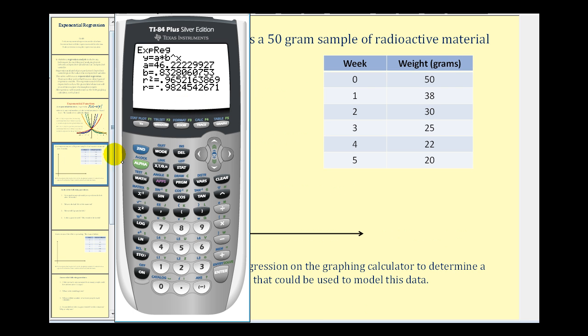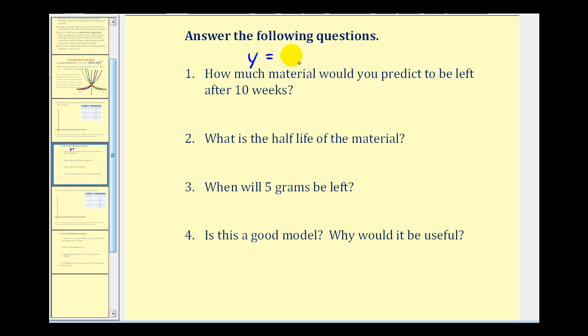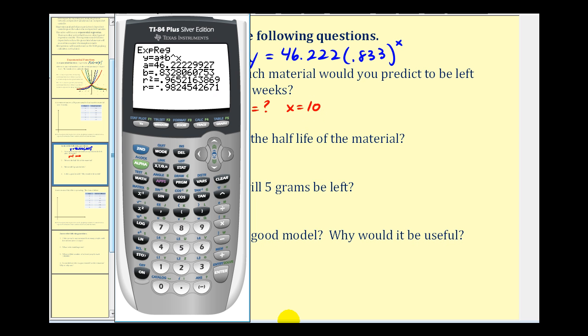Let's go ahead and write this equation down, and then answer some questions based upon our equation. So we have y is equal to approximately 46.222 times approximately .833 raised to the power of x. So the first question, how much material would you predict to be left after 10 weeks? So using our regression equation, we want to know what would y be when x is equal to 10. And let's go ahead and answer this using the graphing calculator. This is one of the main reasons why it's helpful to store the equation in y one. We're going to use the table feature to answer this question.